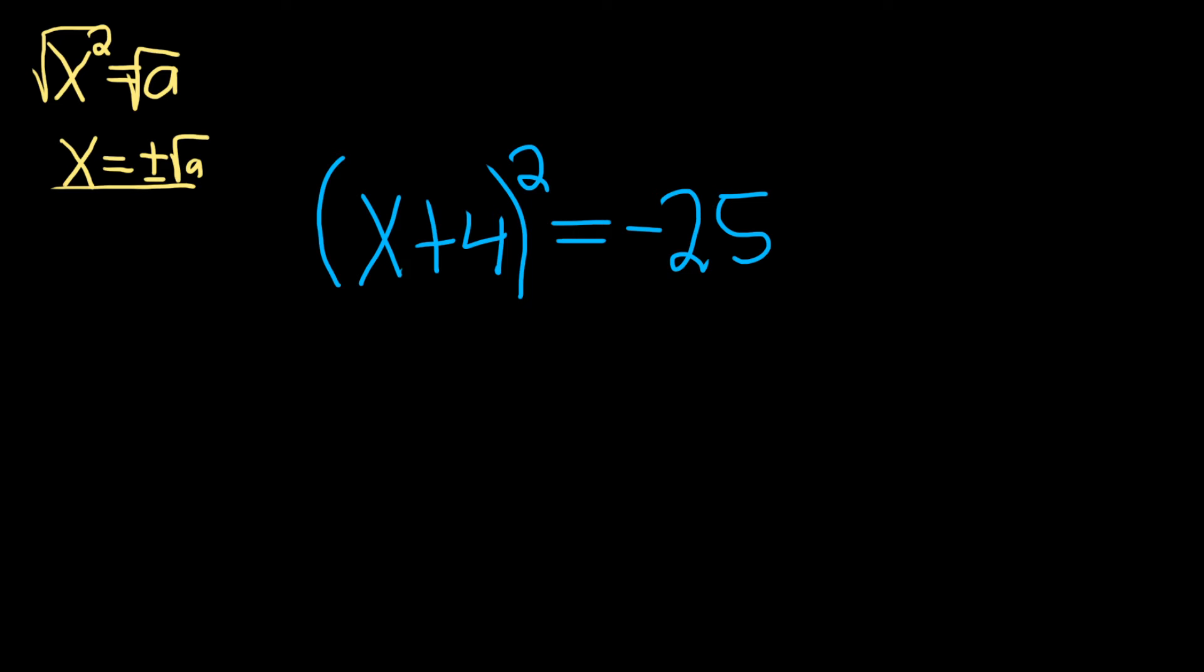So in this problem here we're already in a really good place because we already have something squared and it's equal to a number, so right away we can start by taking the square root. So the square root of (x+4)² is equal to the square root of -25.